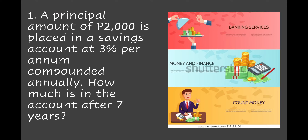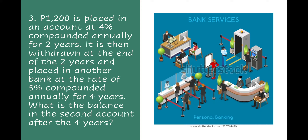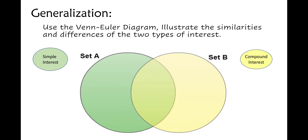For activity two on compound interest: Number one: a principal of 2,000 is placed in a savings account at 3 percent per annum compounded annually. How much is in the account after seven years? Number two: 3,000 is placed at 5 percent compounded quarterly for five years. How much is in the account at the end? Number three: 1,200 is placed at 4 percent compounded annually for two years, then withdrawn and placed in another bank at 5 percent compounded annually for four years. What is the balance in the second account?